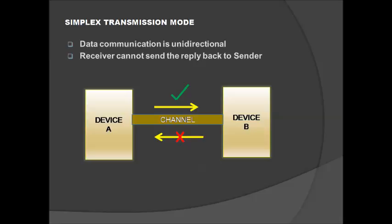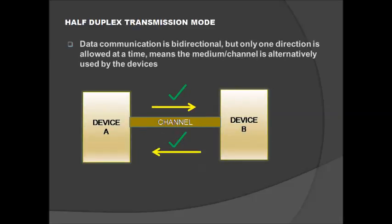Under simplex serial transmission mode, the direction is only one way so data is transmitted in only one direction. The best example for this is the mouse and keyboard — they send their signals to the CPU but the CPU never sends controls back to them.